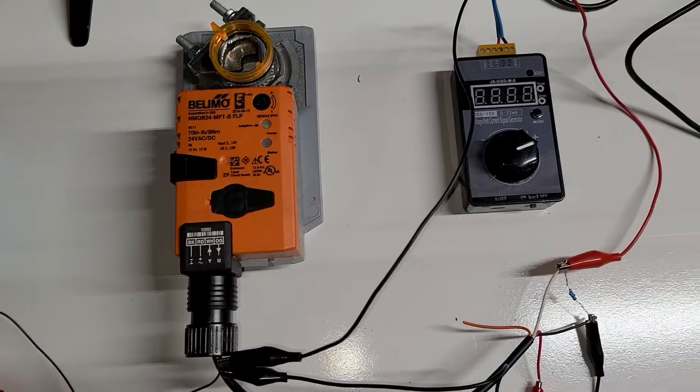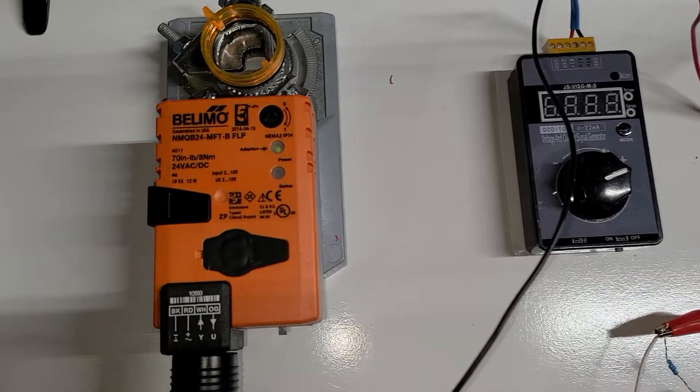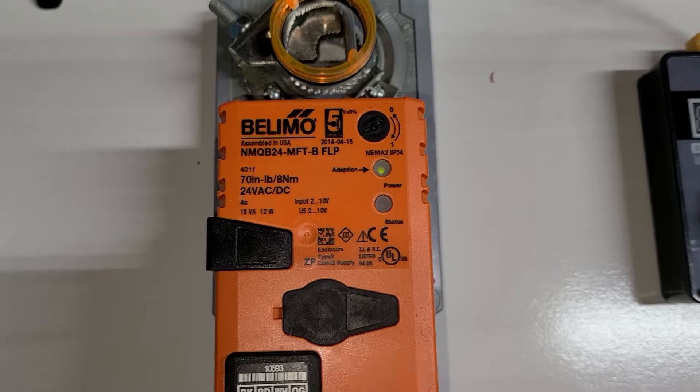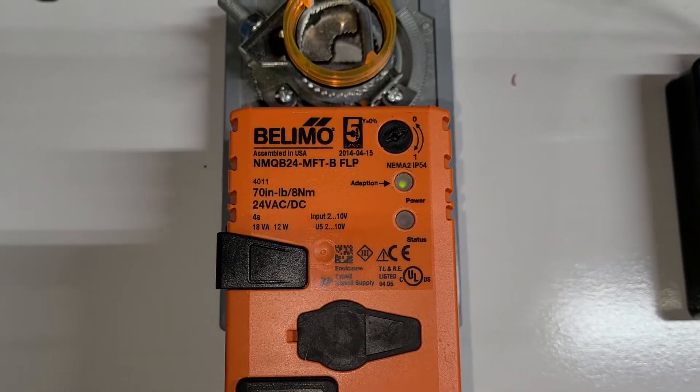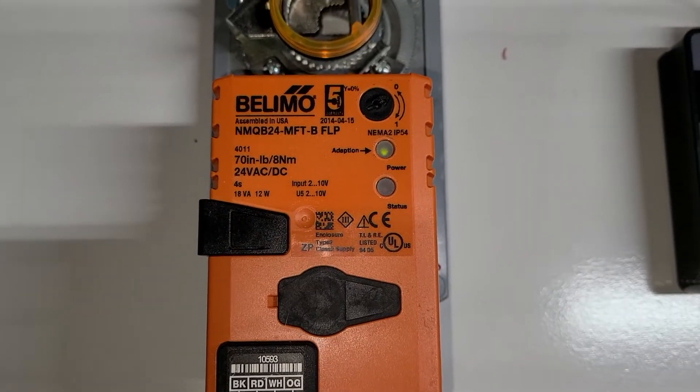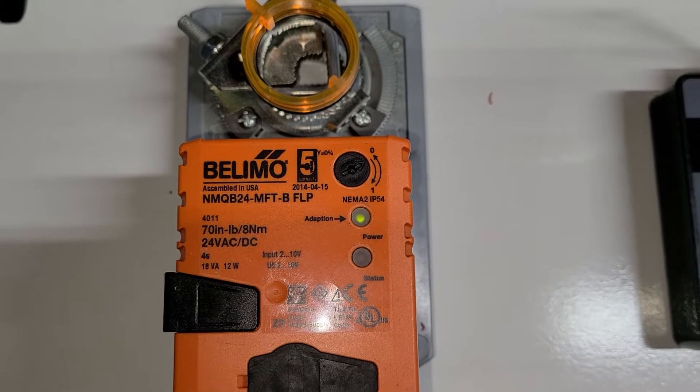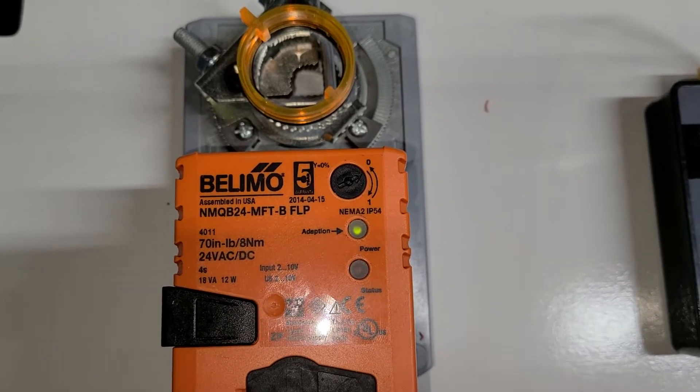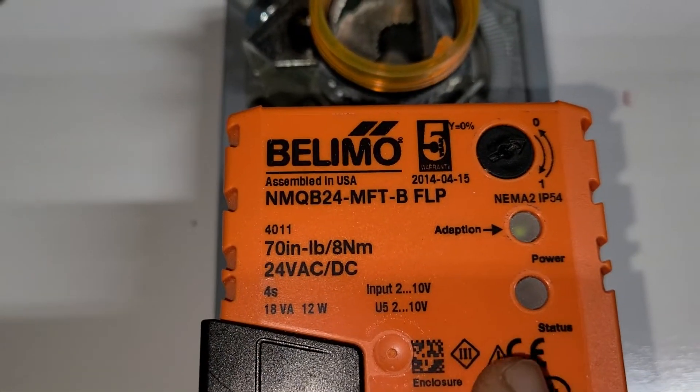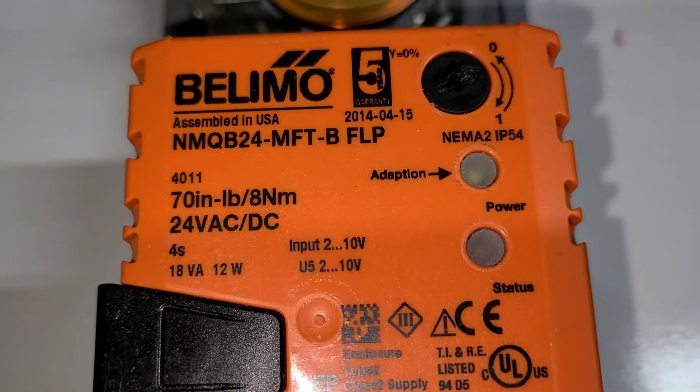Let's look at the 4 to 20 milliamp current loop. I found this valve actuator on eBay. It's sold as a damper actuator for HVAC. I've seen it used on gas valves or anything that you have to turn small amounts. This is a 24 volt power supply - officially it runs on